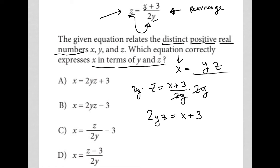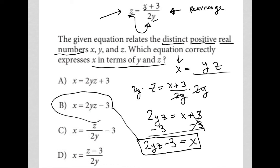Last step to get x isolated is to subtract 3 from both sides. That removes the 3 from the right-hand side, which frees the x to be isolated. And then on the left-hand side, I have 2yz minus 3. So there's my answer. x is equal to 2yz minus 3, and that is answer choice B.